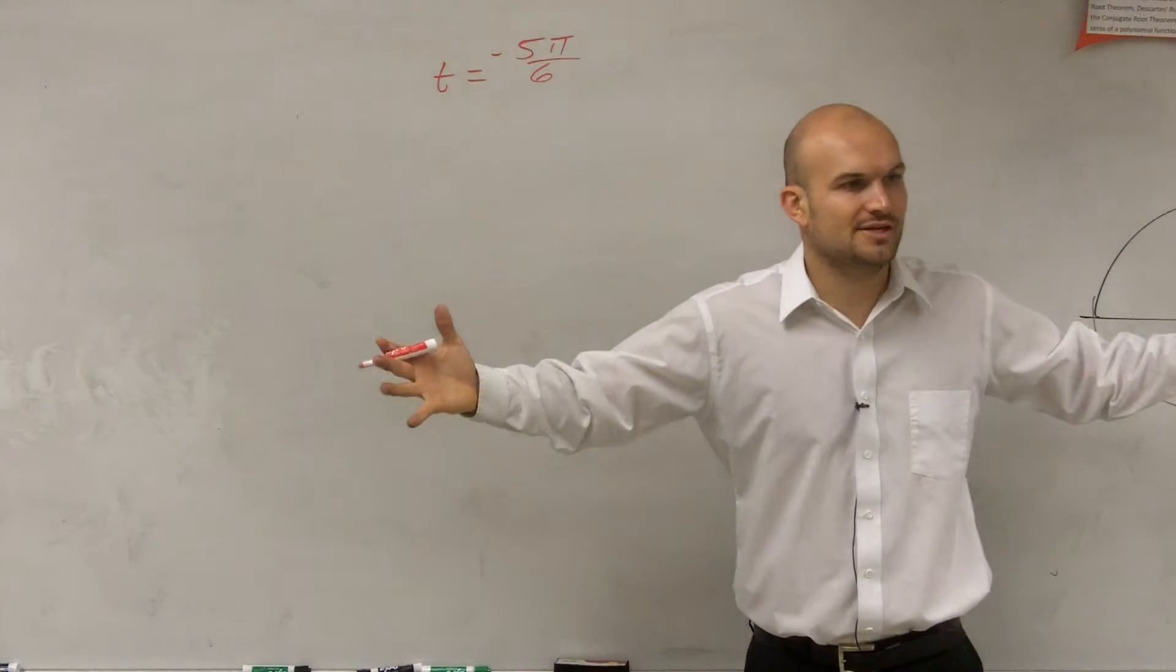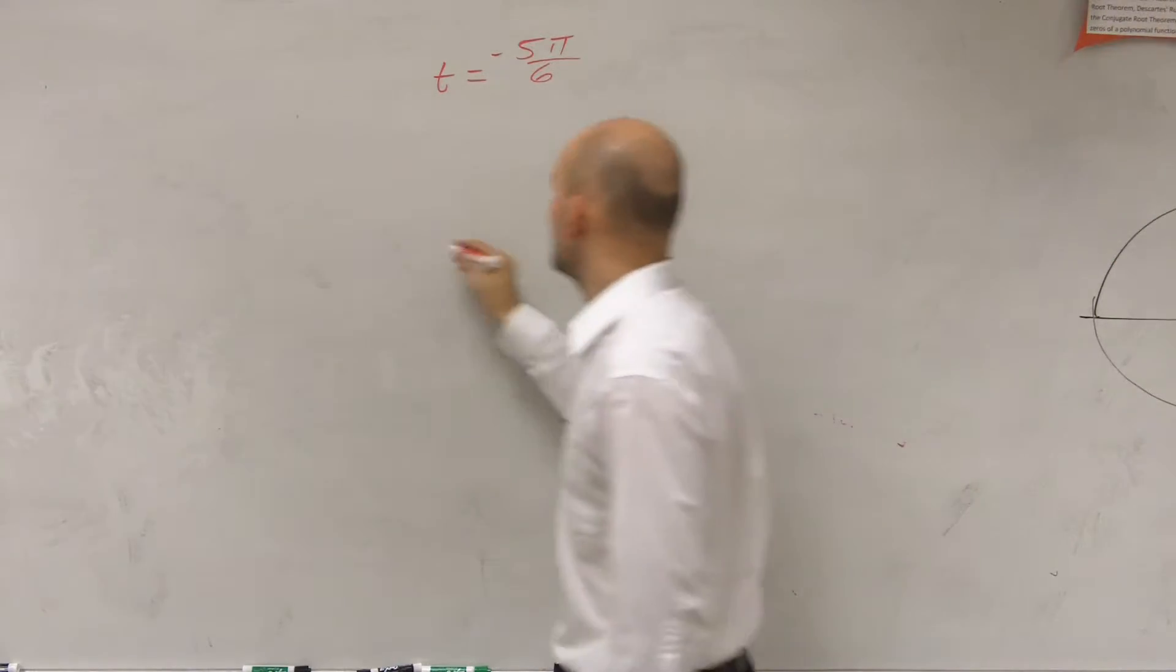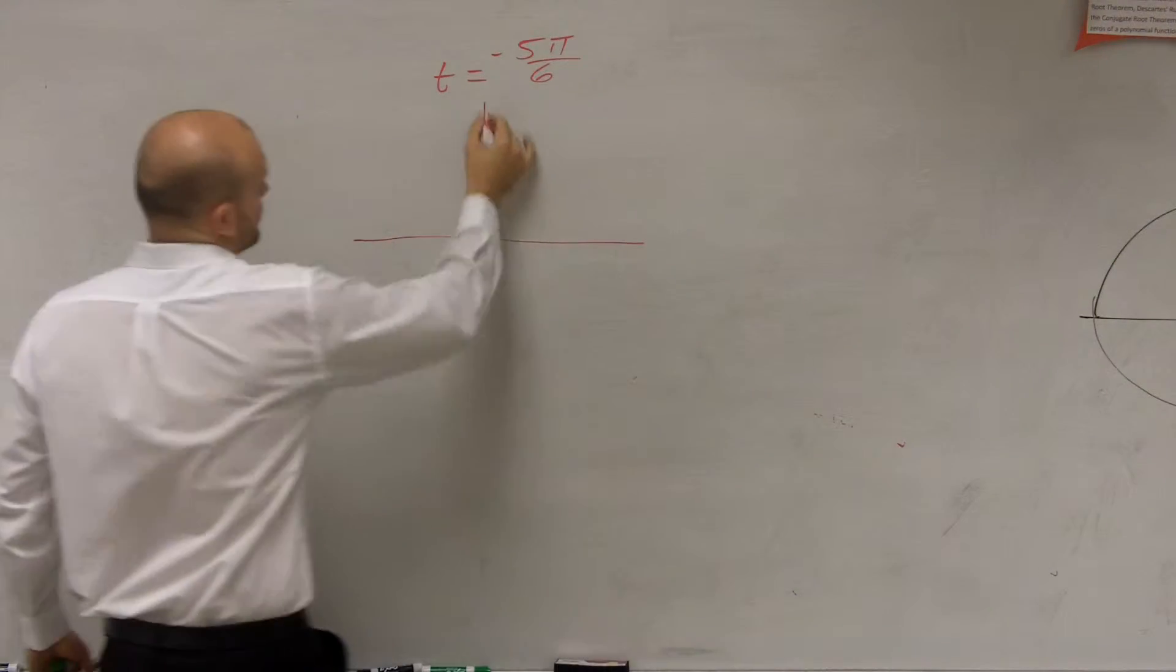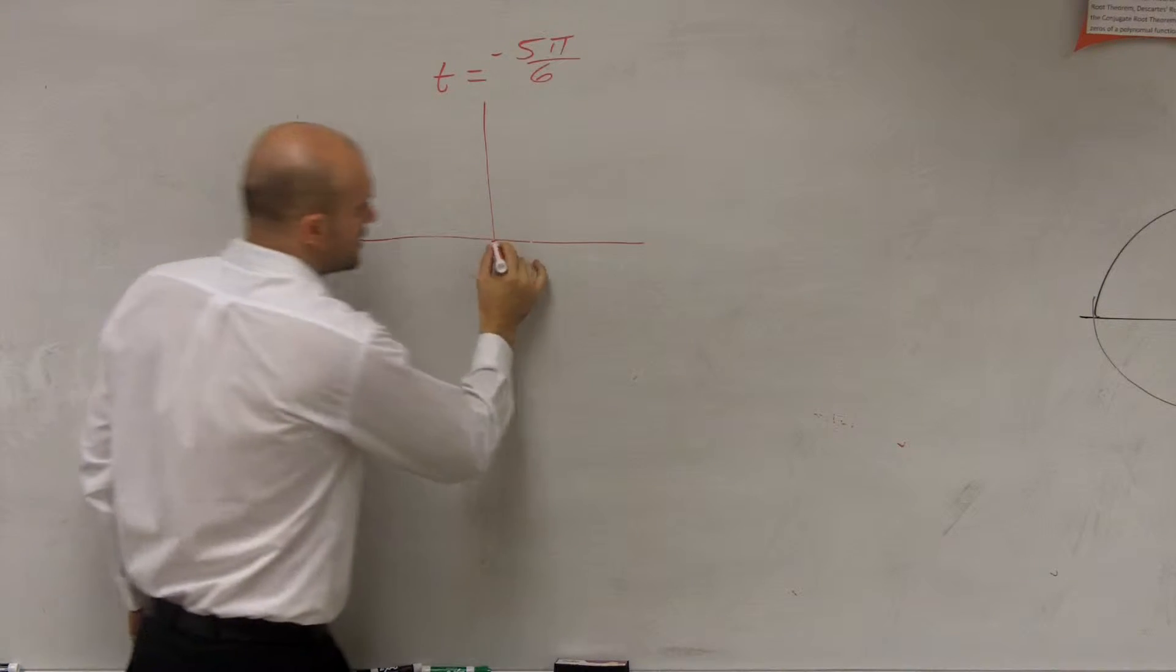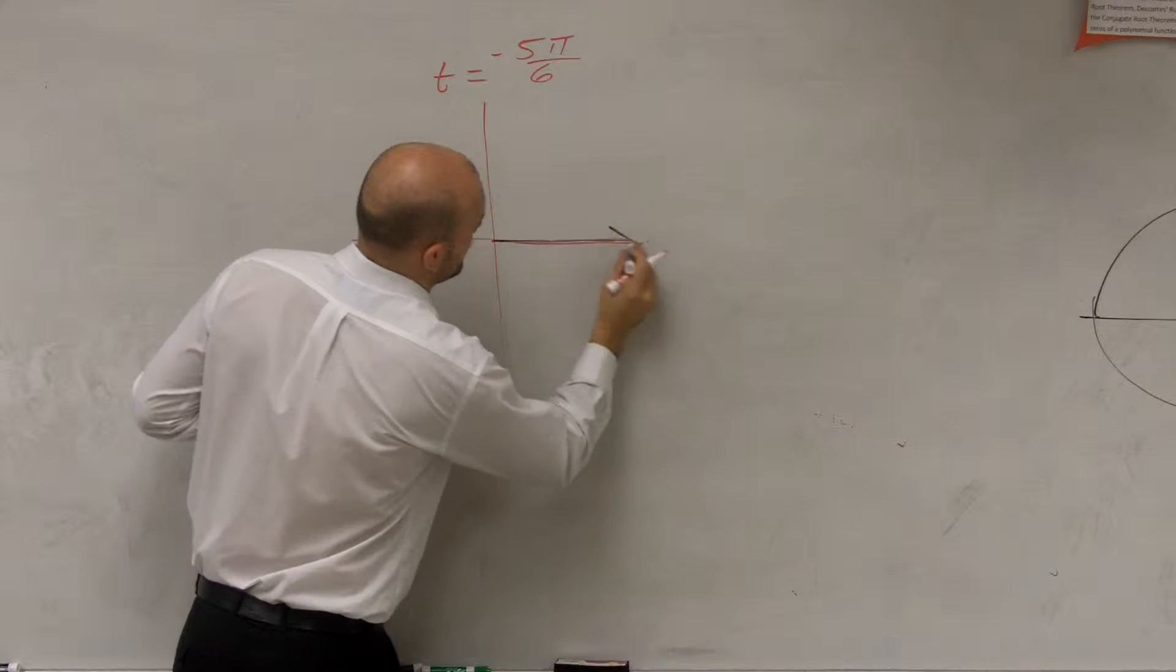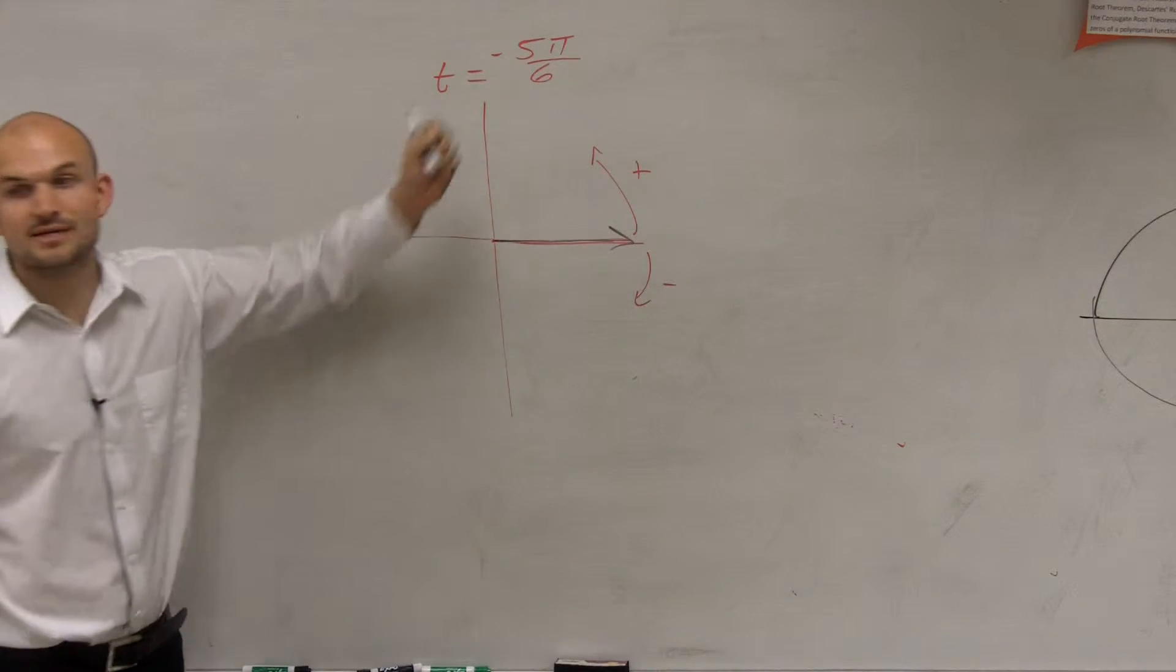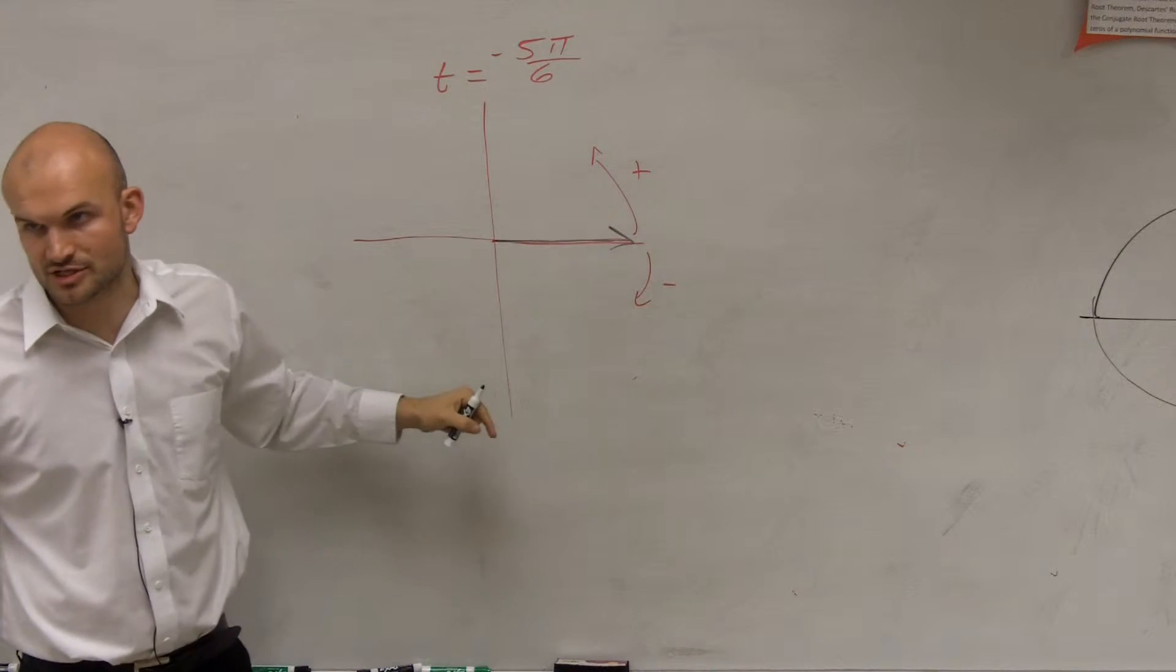The first thing we need to do is we have to graph this. You have to understand where this is. Remember, when we're looking at a graph, we always start here, our initial side. Always. This direction's negative. This direction's positive. Since I'm going negative, I'm going to go in this direction.